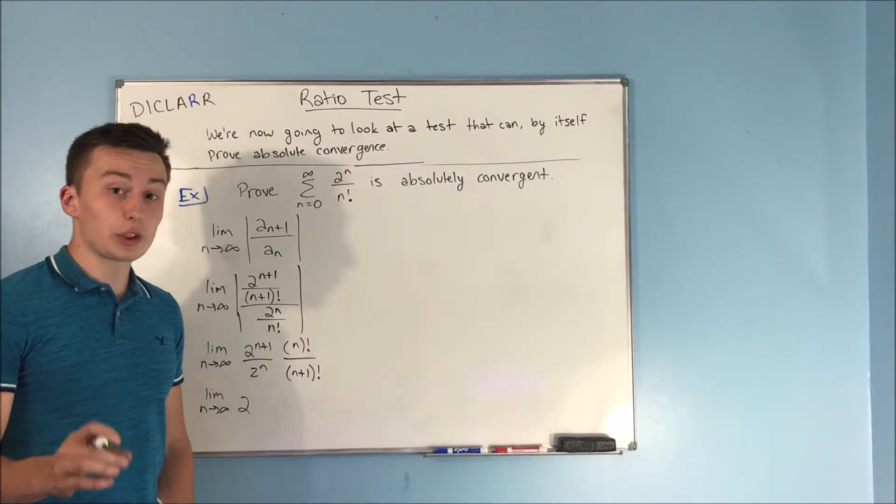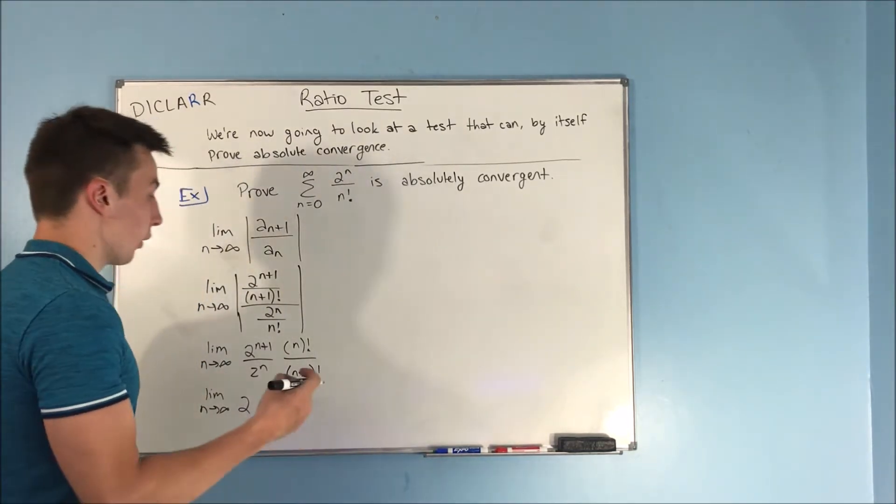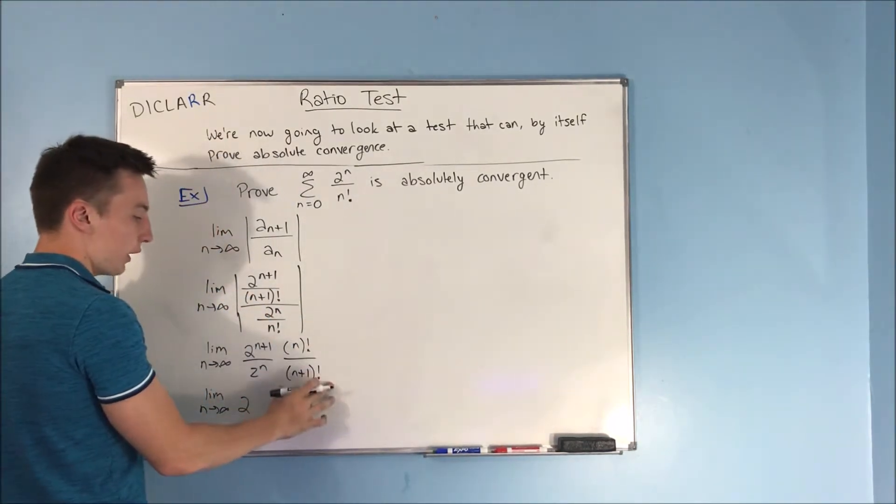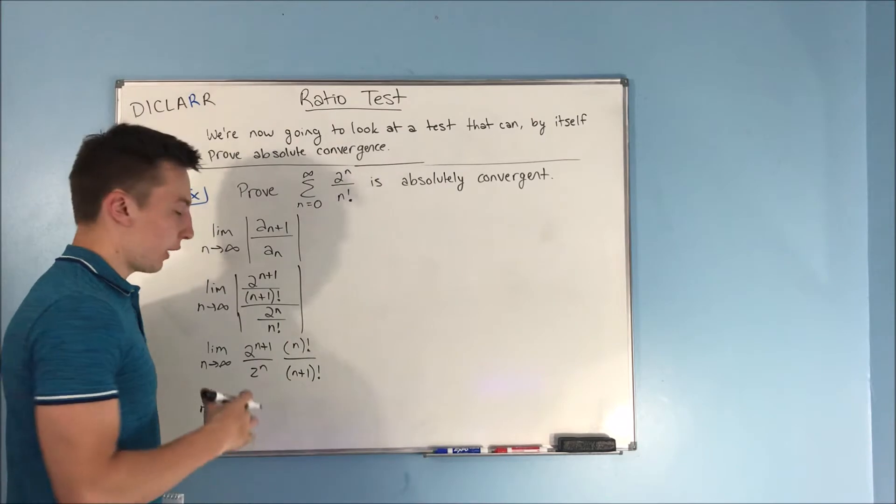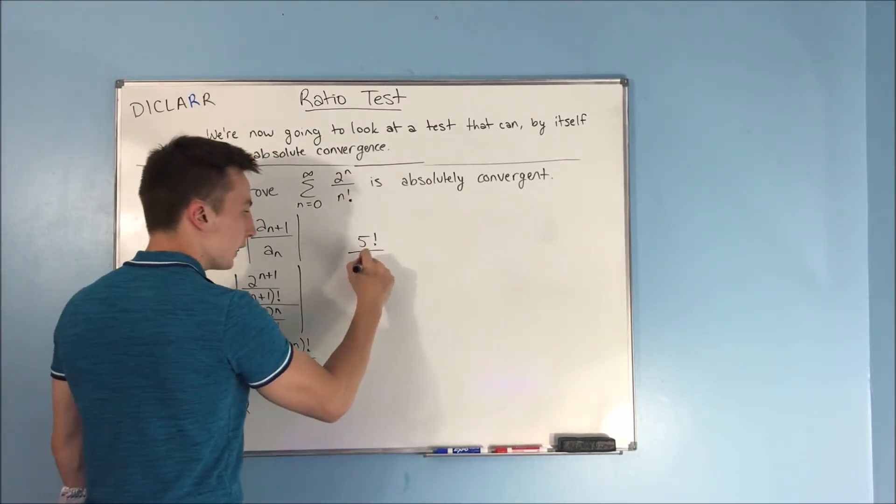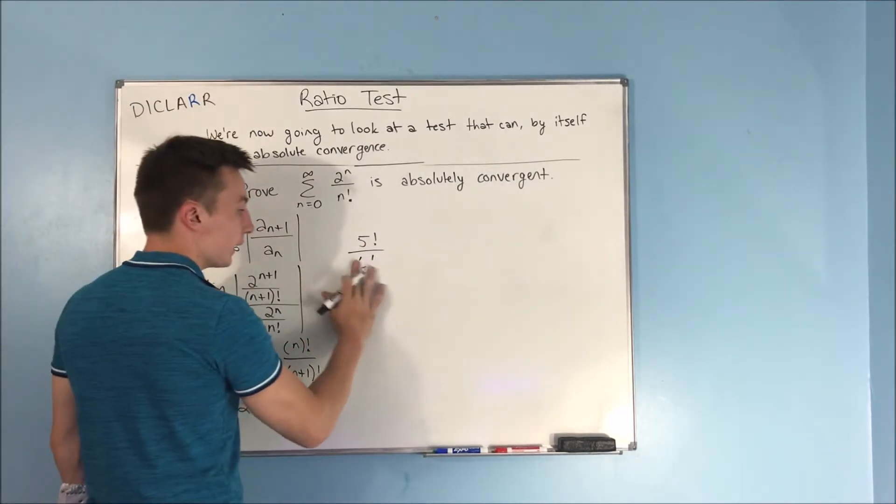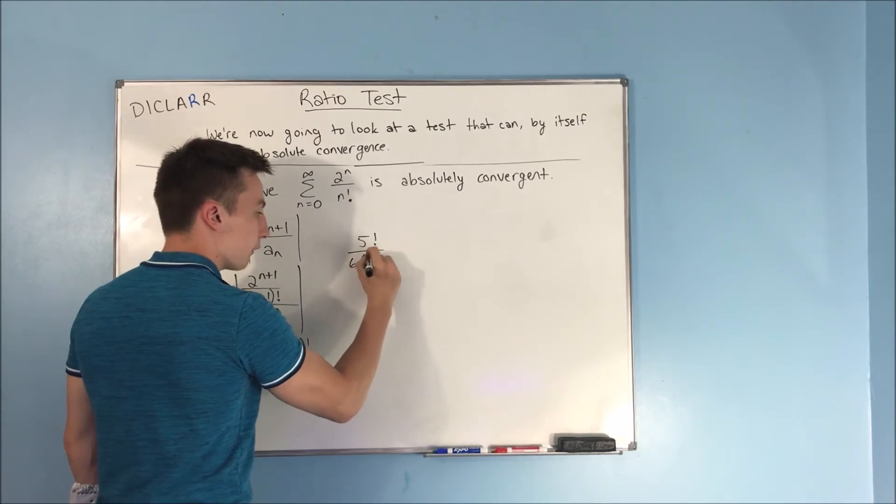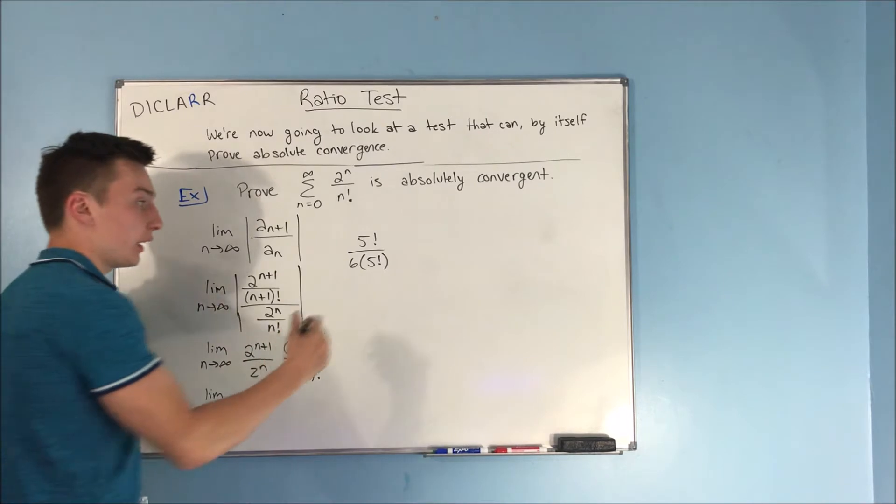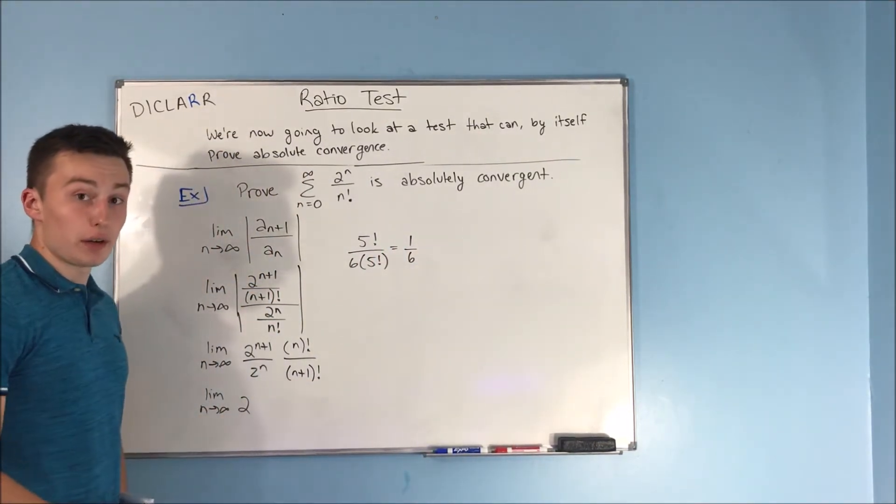Now what about this n factorial over n plus one factorial? Here's why I told you to hold that thought from the five factorial and the six factorial. If we plugged in five for n, then what we have here is five factorial over six factorial. And remember I said that we can rewrite six factorial as six times five factorial. So technically this is just one over six if you plug in five here.